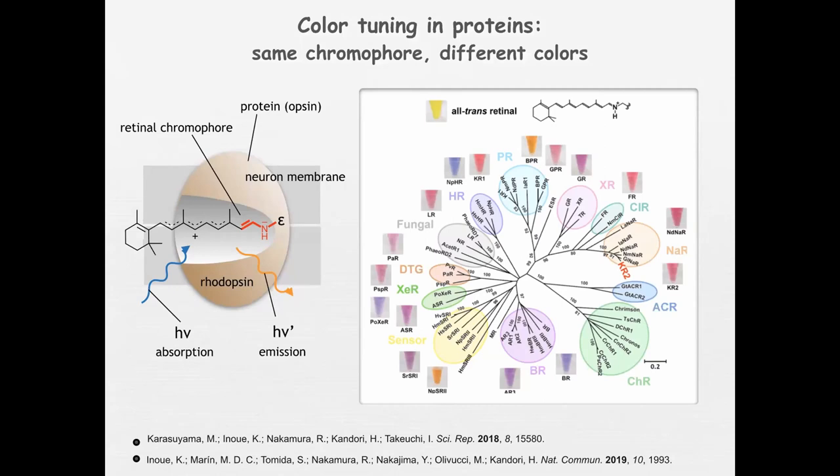The protein sequence can actually change the properties of the chromophore, which seems natural to a theoretical chemist but is a fascinating problem for a biologist. It is actually a difficult problem because they want to learn precisely how the protein sequence controls spectroscopic properties like absorption and emission of the chromophore. They try to do that experimentally through mutagenesis experiments.